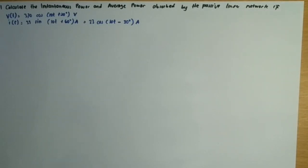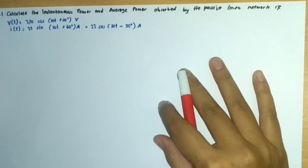Hey guys, in this video we're going to see the solution of practice problem 11.1 from the textbook Fundamentals of Electric Circuits by Alexander and Sadiku, 6th edition. The problem is asking to calculate the instantaneous power and average power absorbed by the passive linear network.